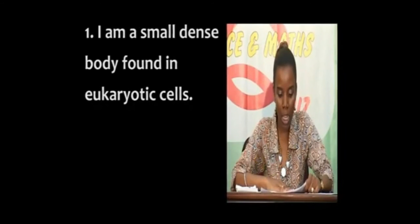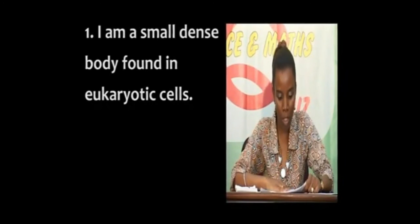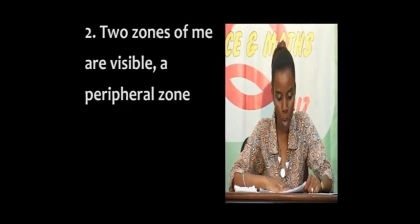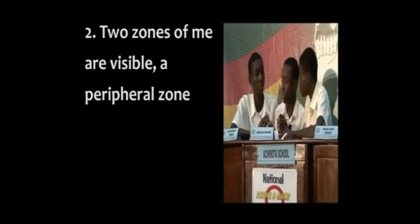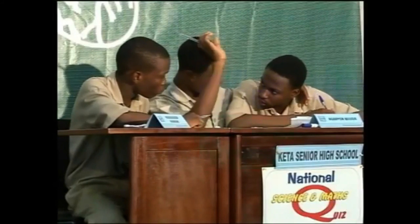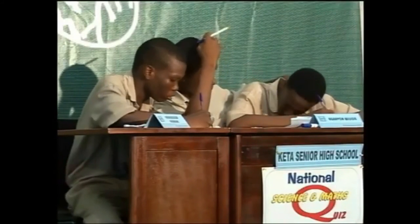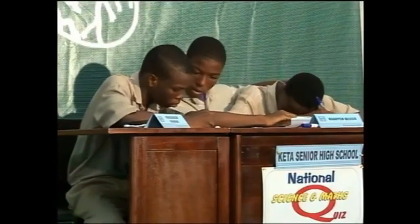Well done. First riddle: I am a small, dense body found in eukaryotic cells. Two zones of me are visible — a peripheral zone... One contestant answered the nucleus — incorrect. Wilson answered but also incorrect. The answer is the nucleolus, not the nucleus.